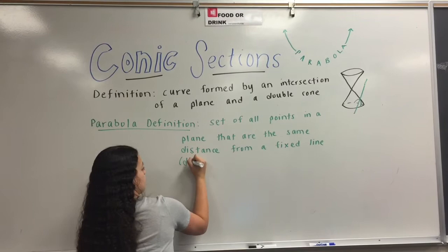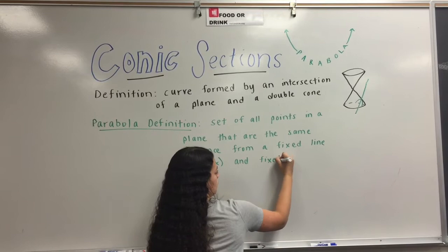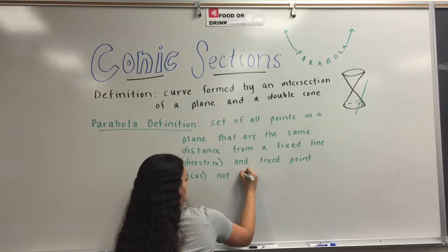The definition of a parabola is a set of all points in a plane that are the same distance from a fixed line, a directrix, and a fixed point, a focus, and not on the line.